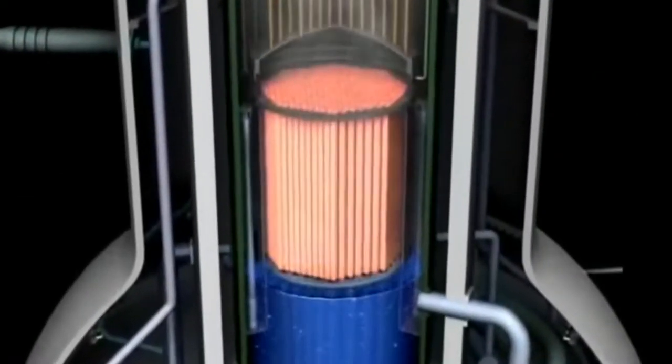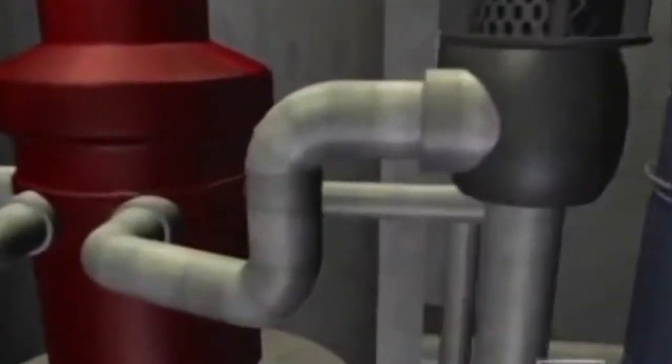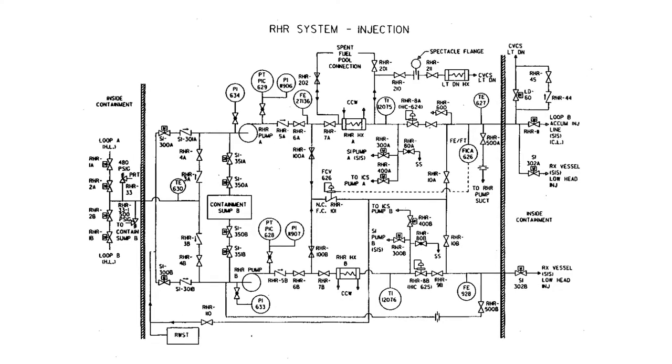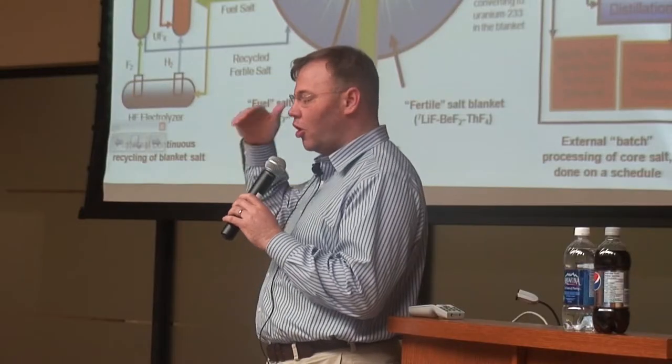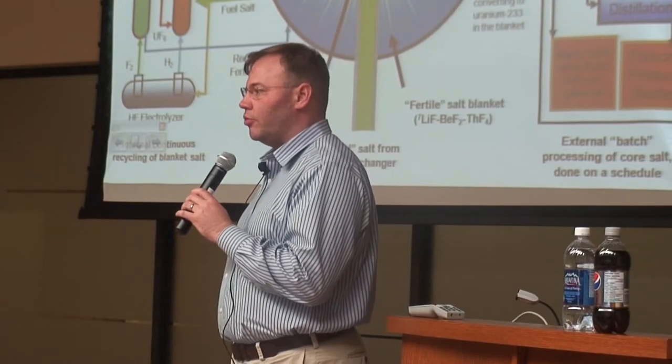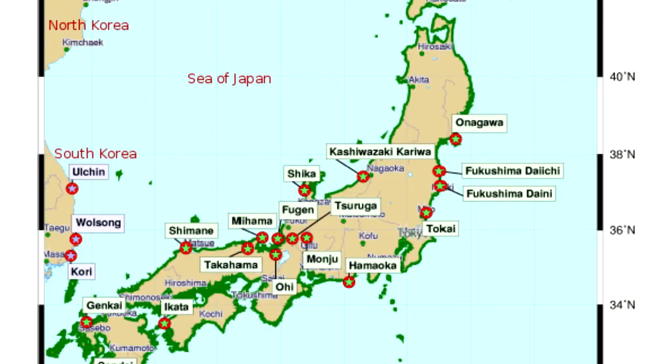In light water reactors, if you allow fuel to be uncovered and heat up, the zirconium cladding will react with steam to form hydrogen. So they have a series of emergency systems designed to always keep the core covered with water. We saw the failure of this at Fukushima Daiichi.